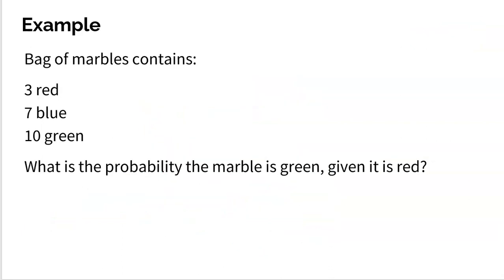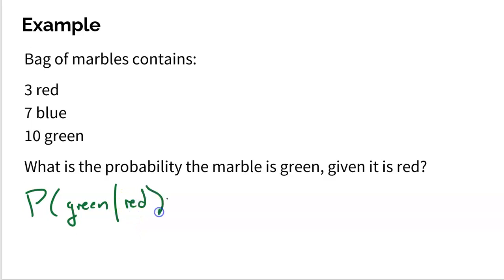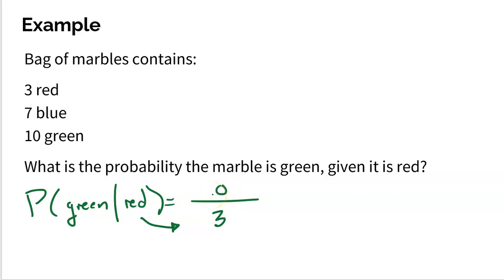Here's a really simple one. A bag of marbles contains three red, seven blue, and ten green. What is the probability the marble is green given it's red? The denominator goes to the condition — we know the marble is already red, and there are three red marbles. Now of those three marbles, how many are also green? That's the numerator — green and red. Well, that's zero. If I know it's red, it can't be green. So the answer is zero. Very, very simple.